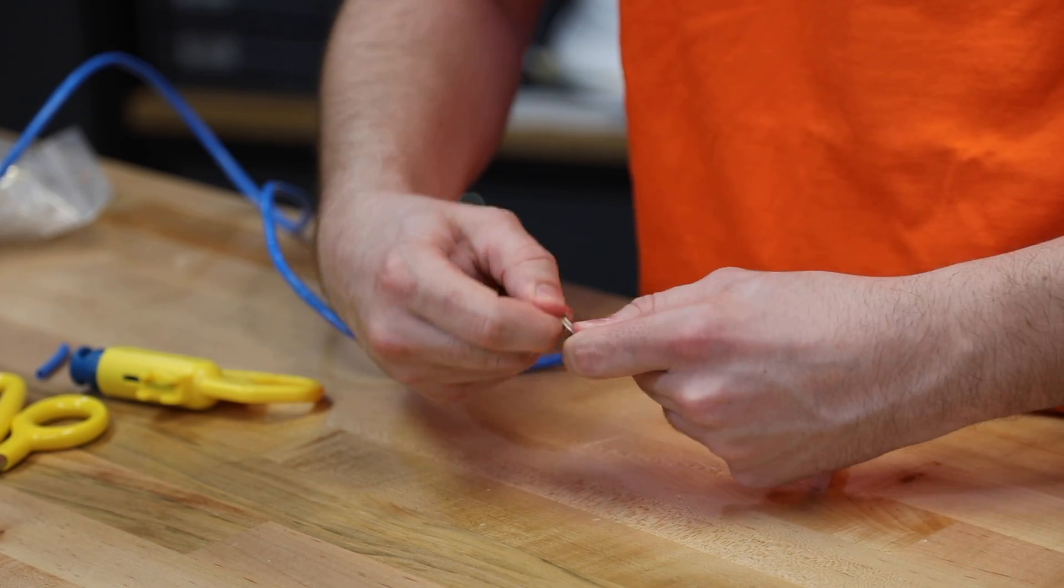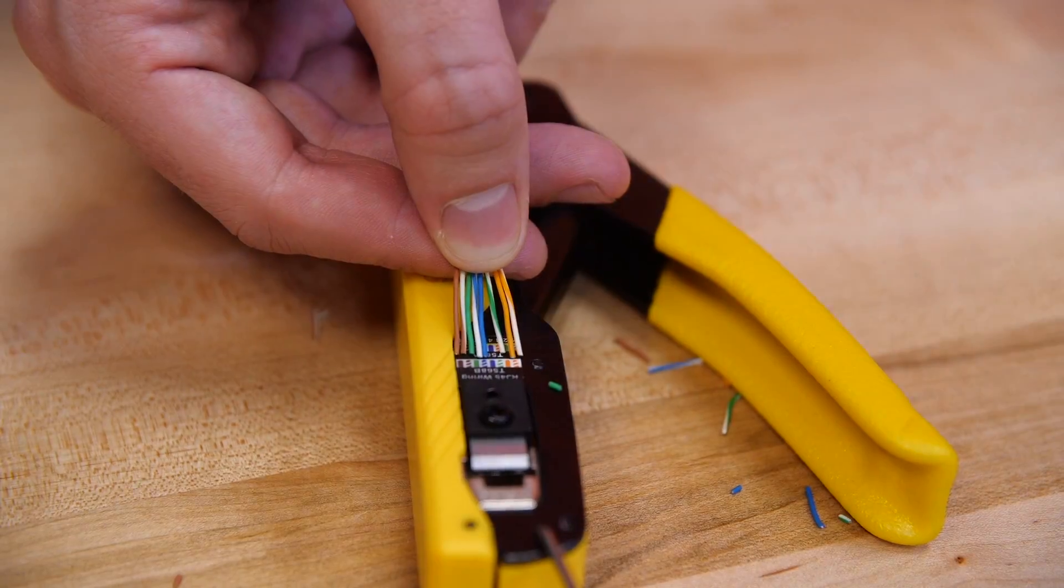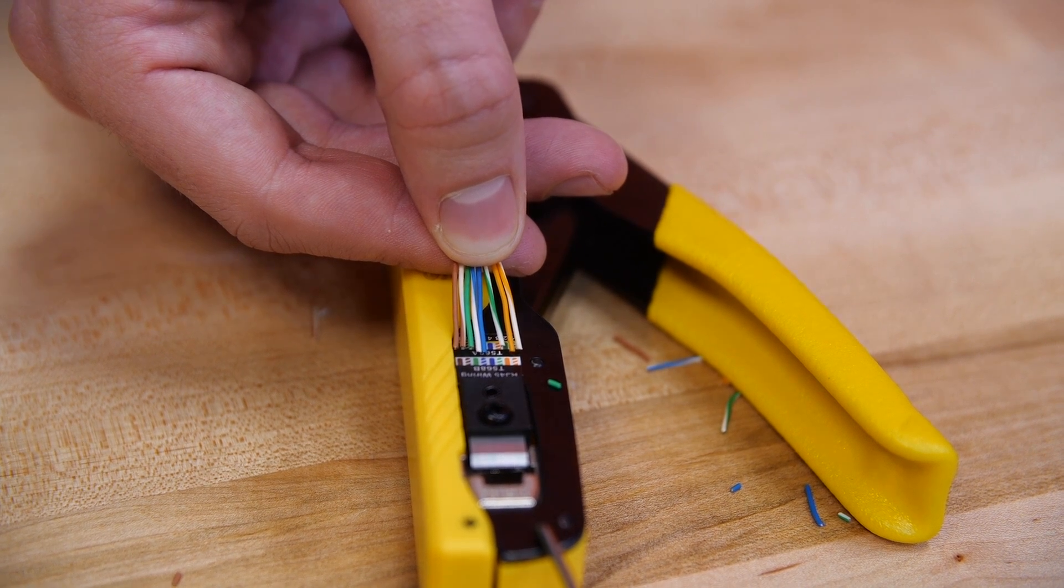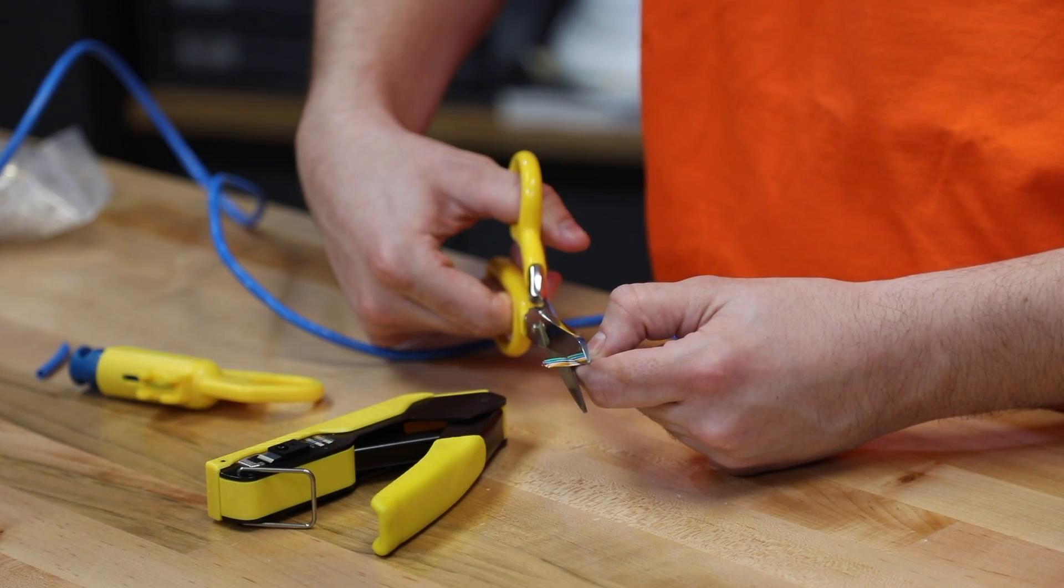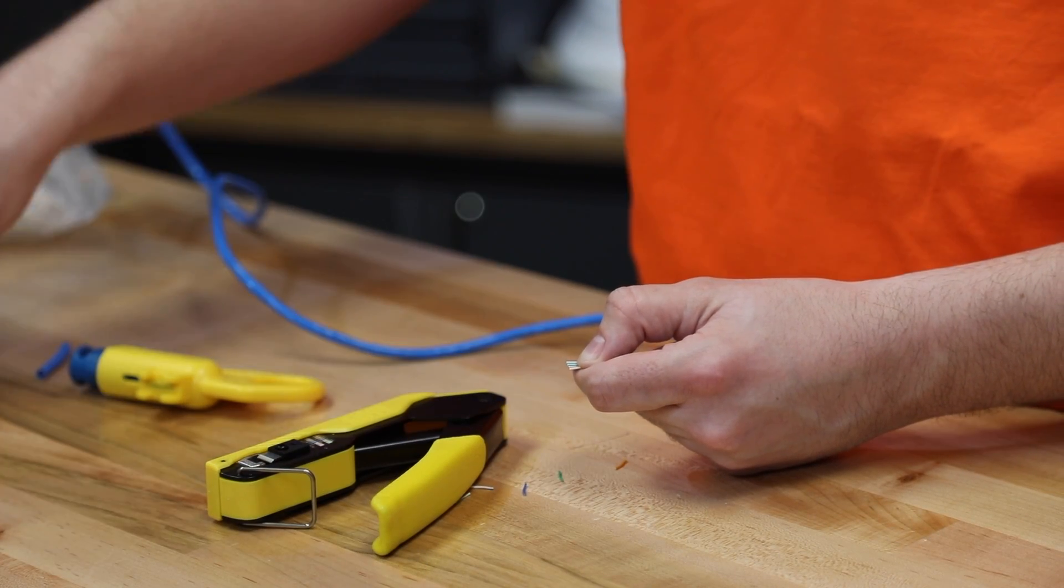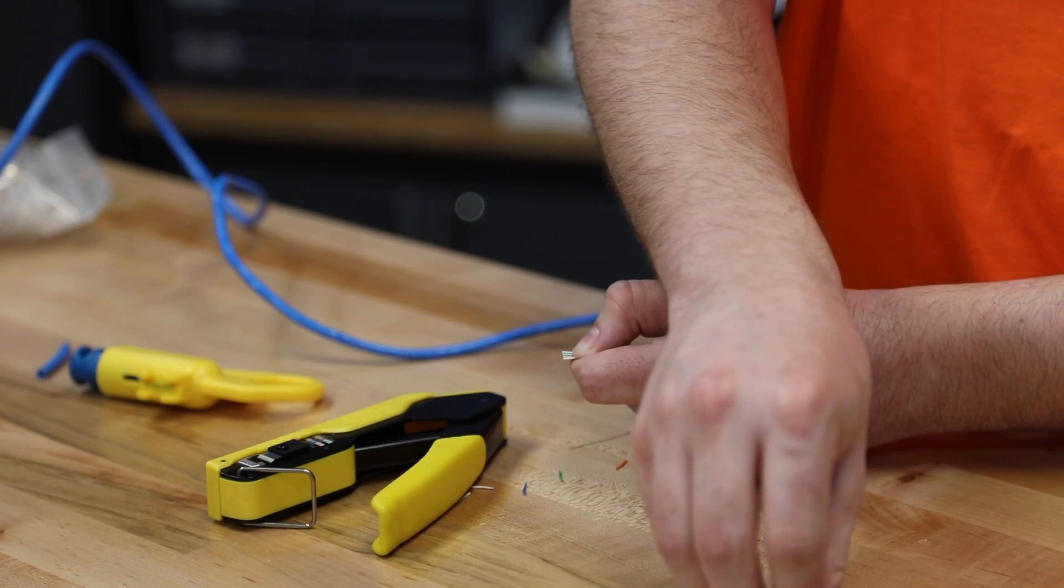Generally, it's T568B. On the tool itself, you will see the cable wiring guide. When the wire's in the right orientation, you need to trim them a nice straight line across. It helps it go through the plug much easier.